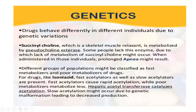For example, succinylcholine, a skeletal muscle relaxant, is metabolized by pseudocholinesterase. In some groups of people who lack this enzyme, the metabolism of succinylcholine will not take place, and administration leads to apnea. Similarly, for the drug isoniazid, there are fast acetylators as well as slow acetylators.